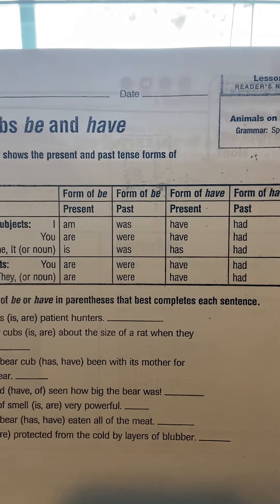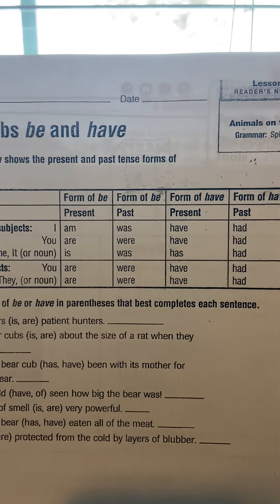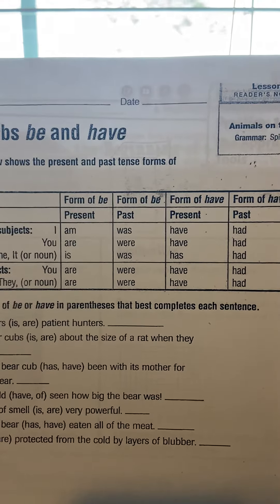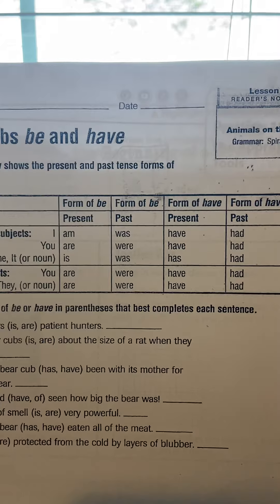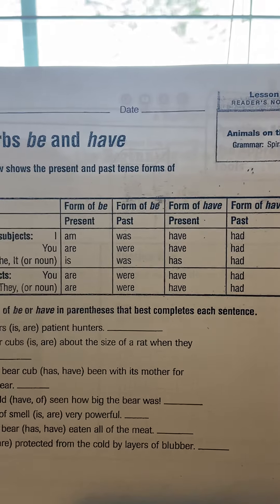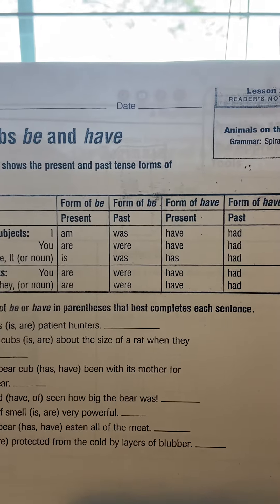Past tense is was, were, was — so I was, you were, he/she/it was.